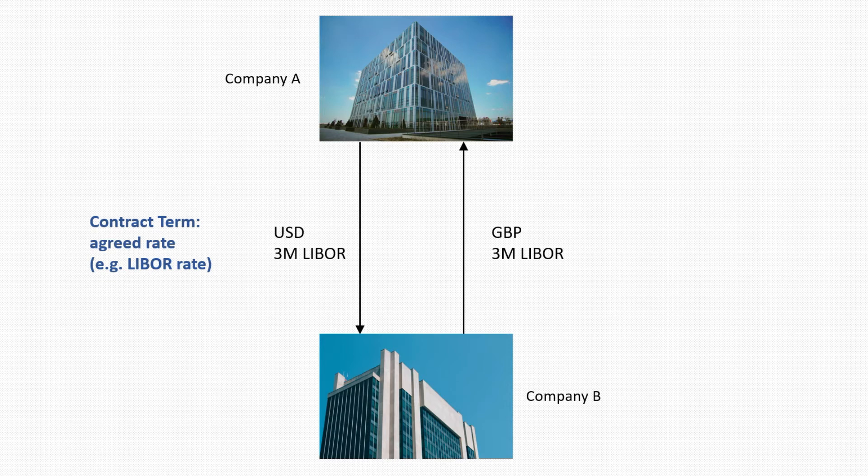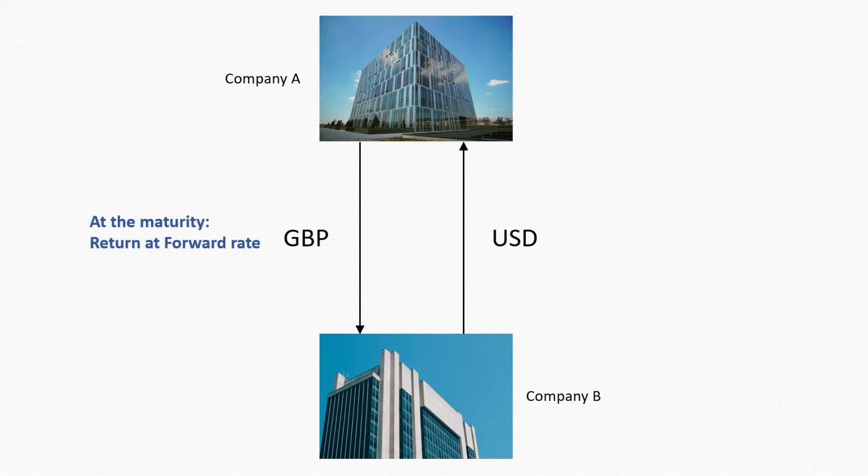Finally, when the contract expires, Company A will return pounds sterling to Company B, and Company B will return U.S. dollars to Company A at a forward rate agreed upon by the counterparties at the beginning of the contract. So basically, this is the idea of how a cross-currency swap contract works.